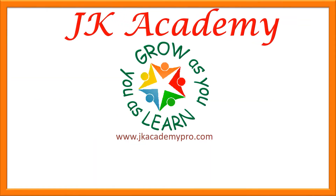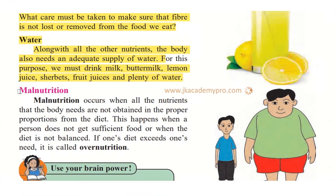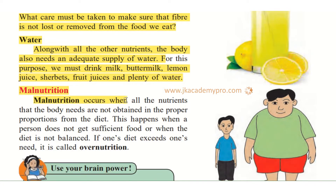This video was made just for you. The next topic we are going to learn is about malnutrition. Mal means lack of, or less of, nutrition. Malnutrition occurs when all the nutrients that the body needs are not obtained in the proper proportion from the diet.